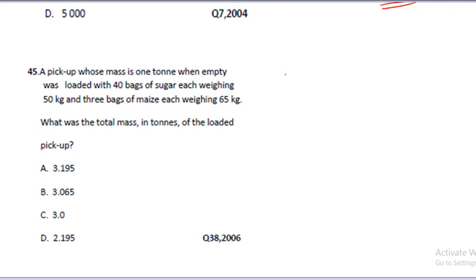The first thing you need to understand is that the pickup had exactly one ton - that's the weight of the pickup when it's not carrying anything, and that's 1000 kg. Now for the 40 bags of sugar that was loaded on it, each of them weighed 50 kg. So sugar will be 40 times 50, and that's going to give us 2000 kg.